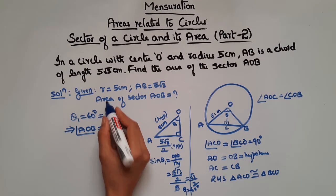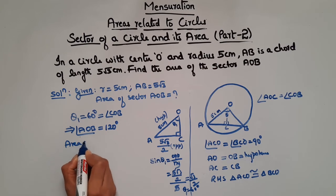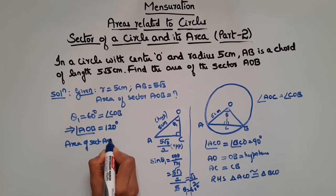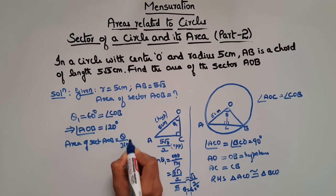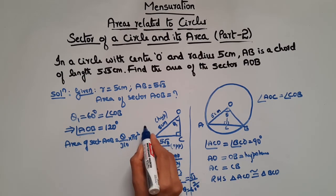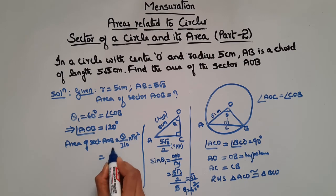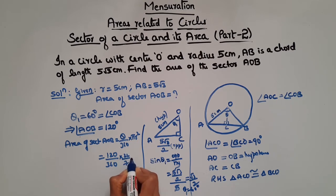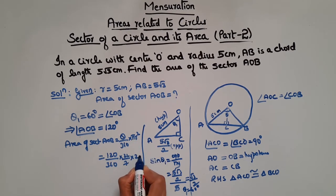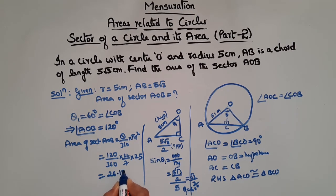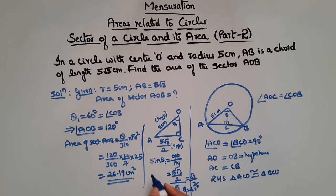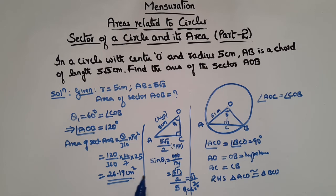Now that we have theta, we can find the area of the sector. Area of sector AOB equals theta by 360 into pi r square, which is 120 by 360 into 22 by 7 into 25. When you simplify this you get 26.19 square centimeters. So the area of the sector AOB is 26.19 square centimeters.